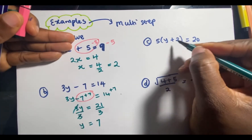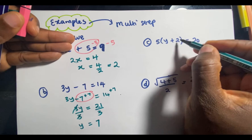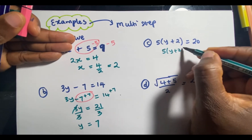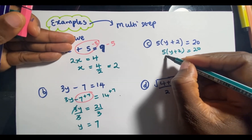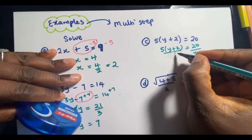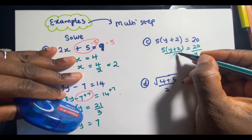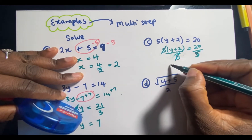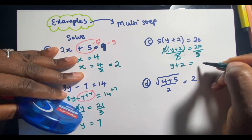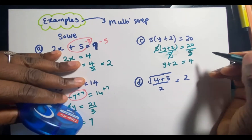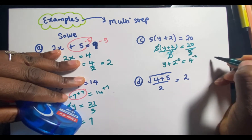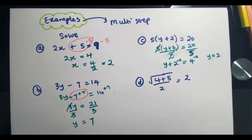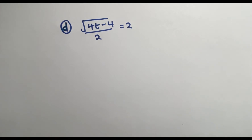This example says 5 times (y + 2) = 20. To get rid of the brackets, since 5 is multiplied, we divide both sides by 5. The 5 cancels, giving y + 2 = 4. Now subtract 2 from both sides, and y is equal to 4 minus 2, which is 2.